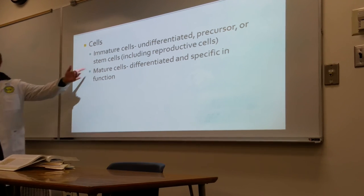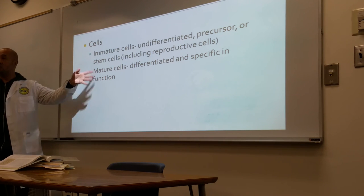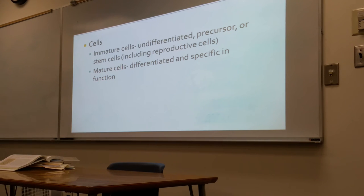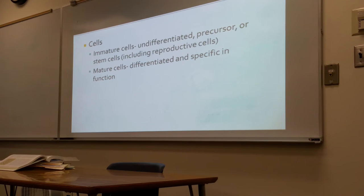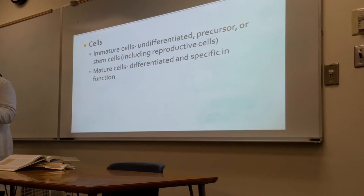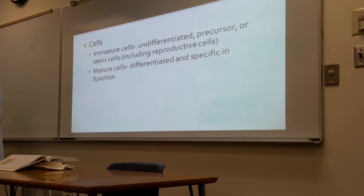Immature cells are the most radiosensitive because they are rapidly dividing. If damage occurs mid-division, that damage is transferred to daughter cells quickly before recovery. Mature cells don't divide as fast, and the longer interphase allows time for the cell to recover, preventing transfer of damage to daughter cells.